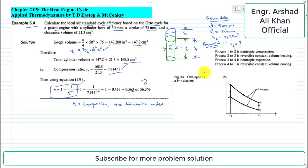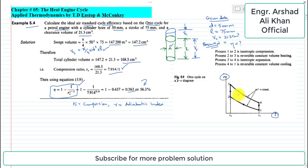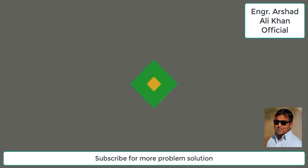For students interested in the basics of the Otto cycle: on a P-V diagram there are four processes — process 1 to 2 is isentropic compression, 2 to 3 is reversible constant-volume heating, 3 to 4 is isentropic expansion, and 4 to 1 is reversible constant-volume cooling.